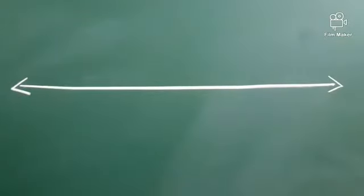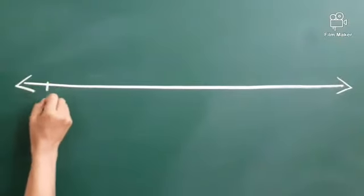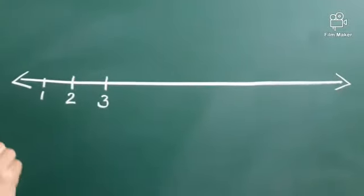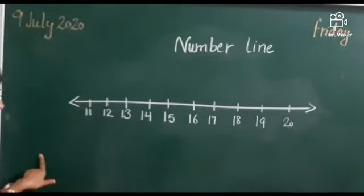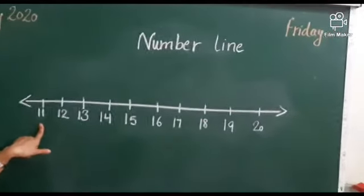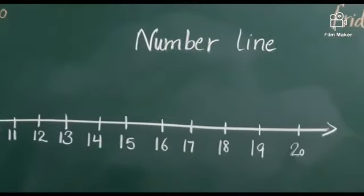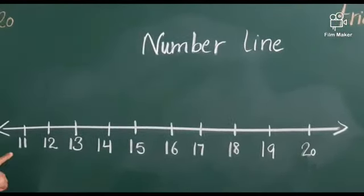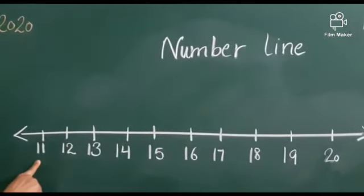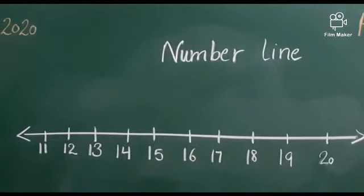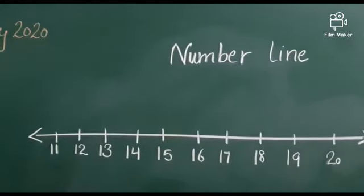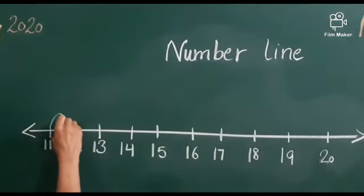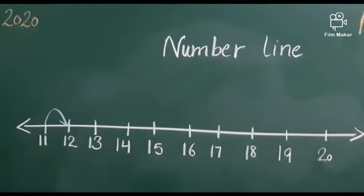See, this is a line. And if I write numbers on it, it will become a number line. Children, see, I have written the counting 11 to 20 on this number line. And suppose, if you are standing on number 11 and you want to jump one more, then tell me on which number you will jump? Yes, you are right. We will jump on number 12. We will mark this with an arrow.